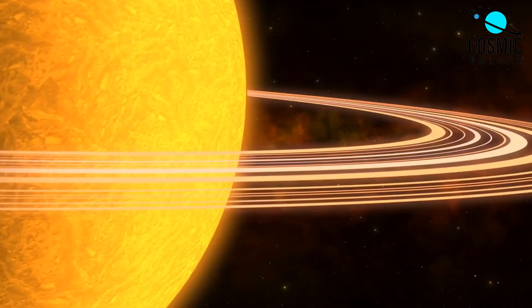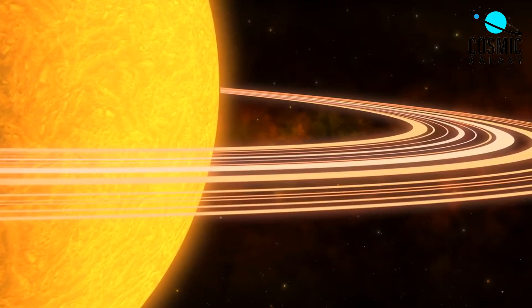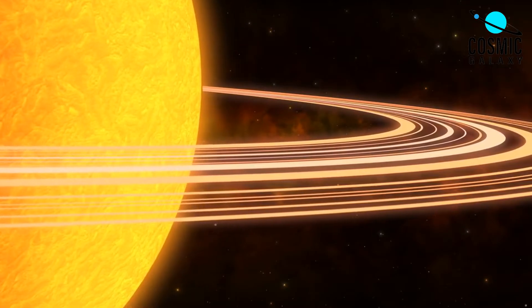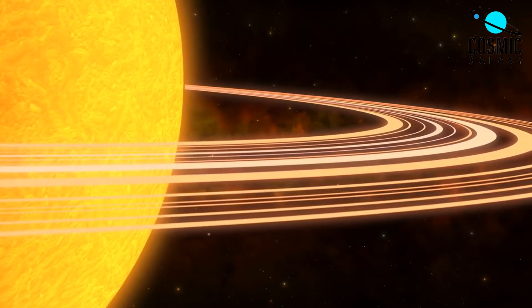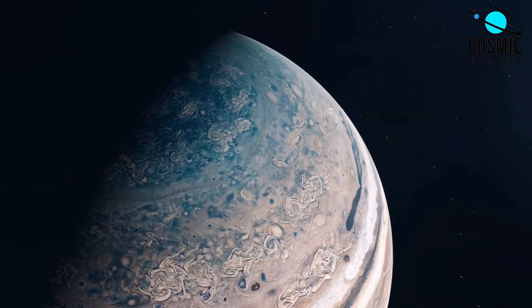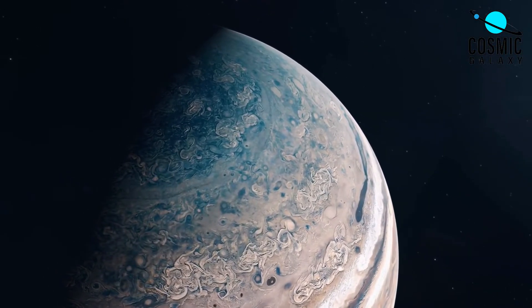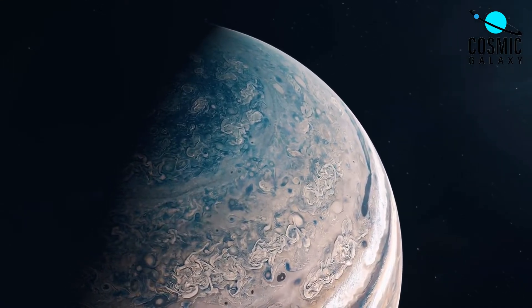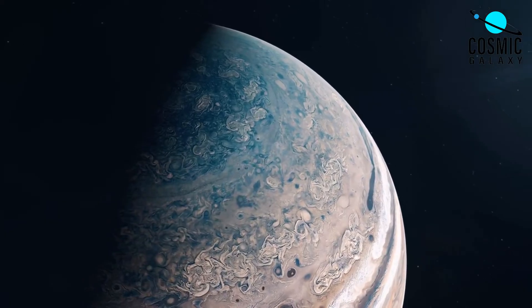The reason why the outer planets are not rocky is because they formed further from the sun, where the temperature and pressure were much lower than in the inner solar system. These conditions allowed for the formation of icy materials like water, ammonia, and methane, which became the dominant components of the gas giants.